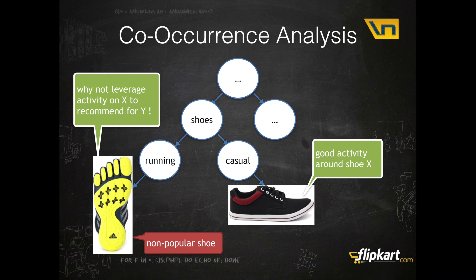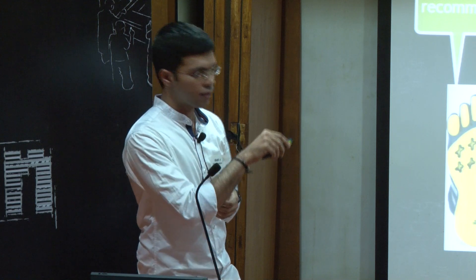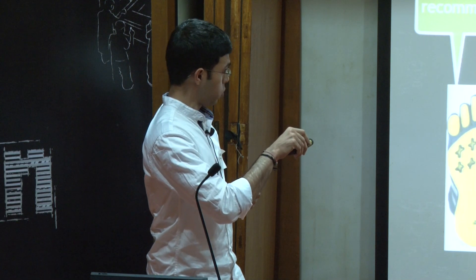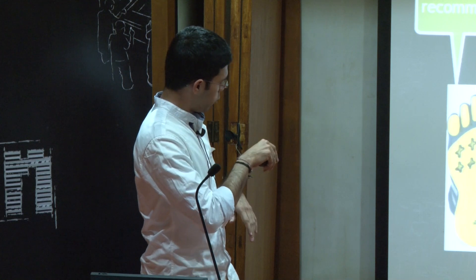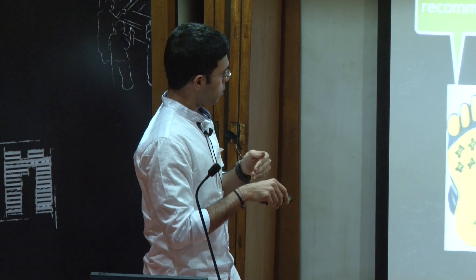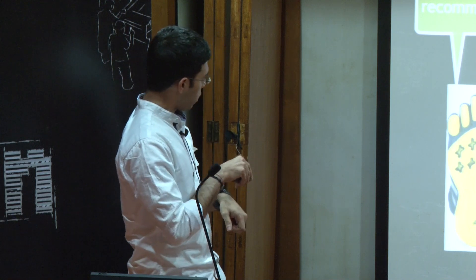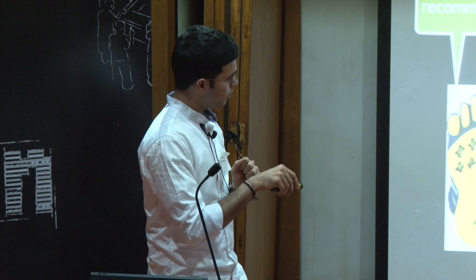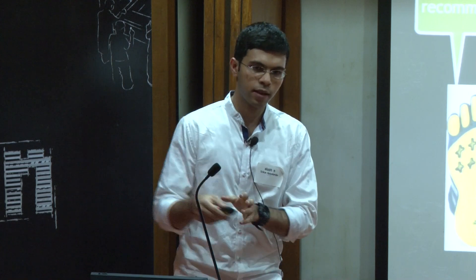Let's say you have in your catalog — it could be an e-commerce catalog or a Netflix movie catalog — some root categories, then drama and subcategories. In Flipkart, we have a category tree with a root node, then shoes, further categorized into running shoes, casual shoes, and so on as leaf nodes. The approach tries to leverage the good activity around a popular product like a canvas shoe, and use it to recommend stuff for a non-popular shoe that doesn't have much activity. That's the solution at a high level — we'll get to know how this happens in the demo section.